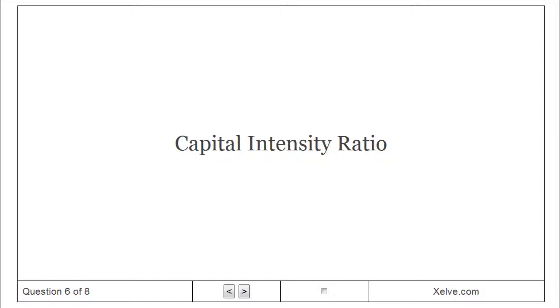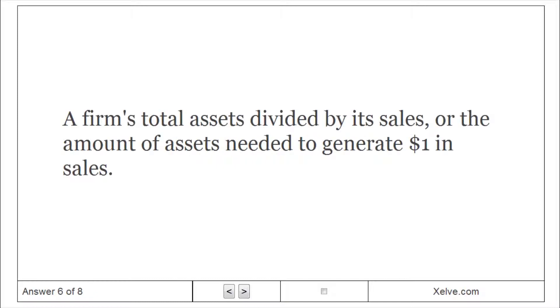Capital Intensity Ratio. A firm's total assets divided by its sales, or the amount of assets needed to generate $1 in sales.